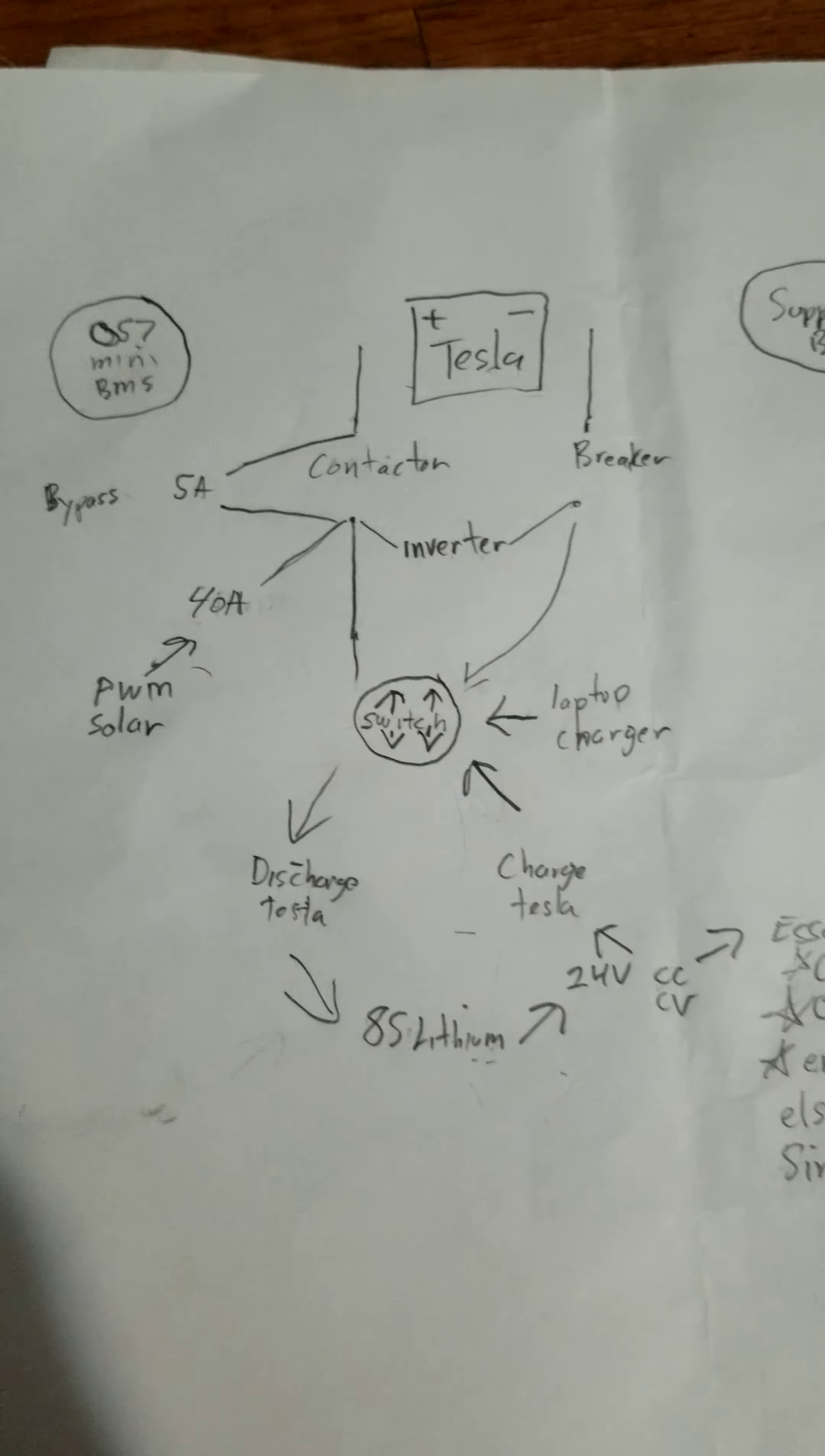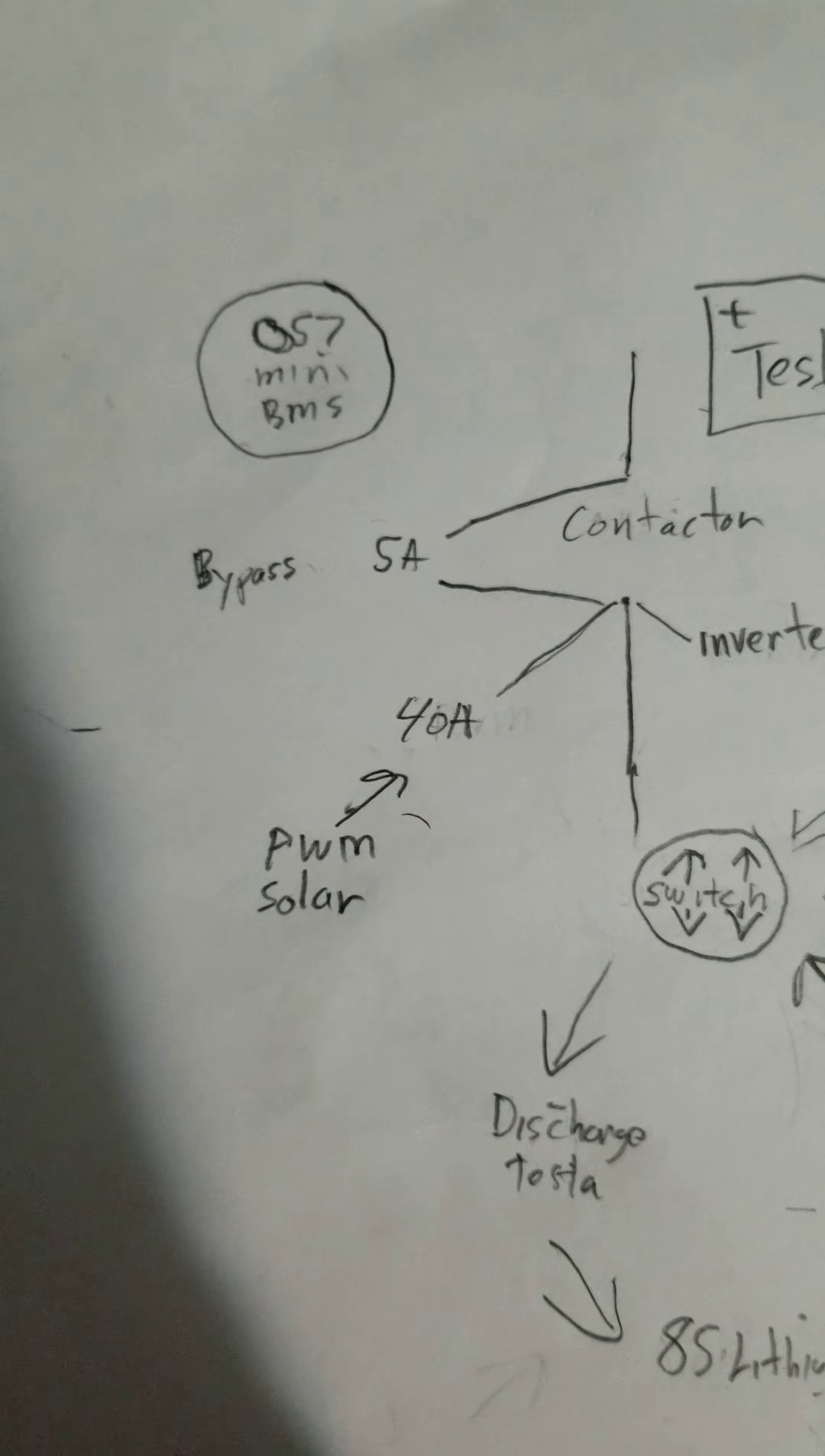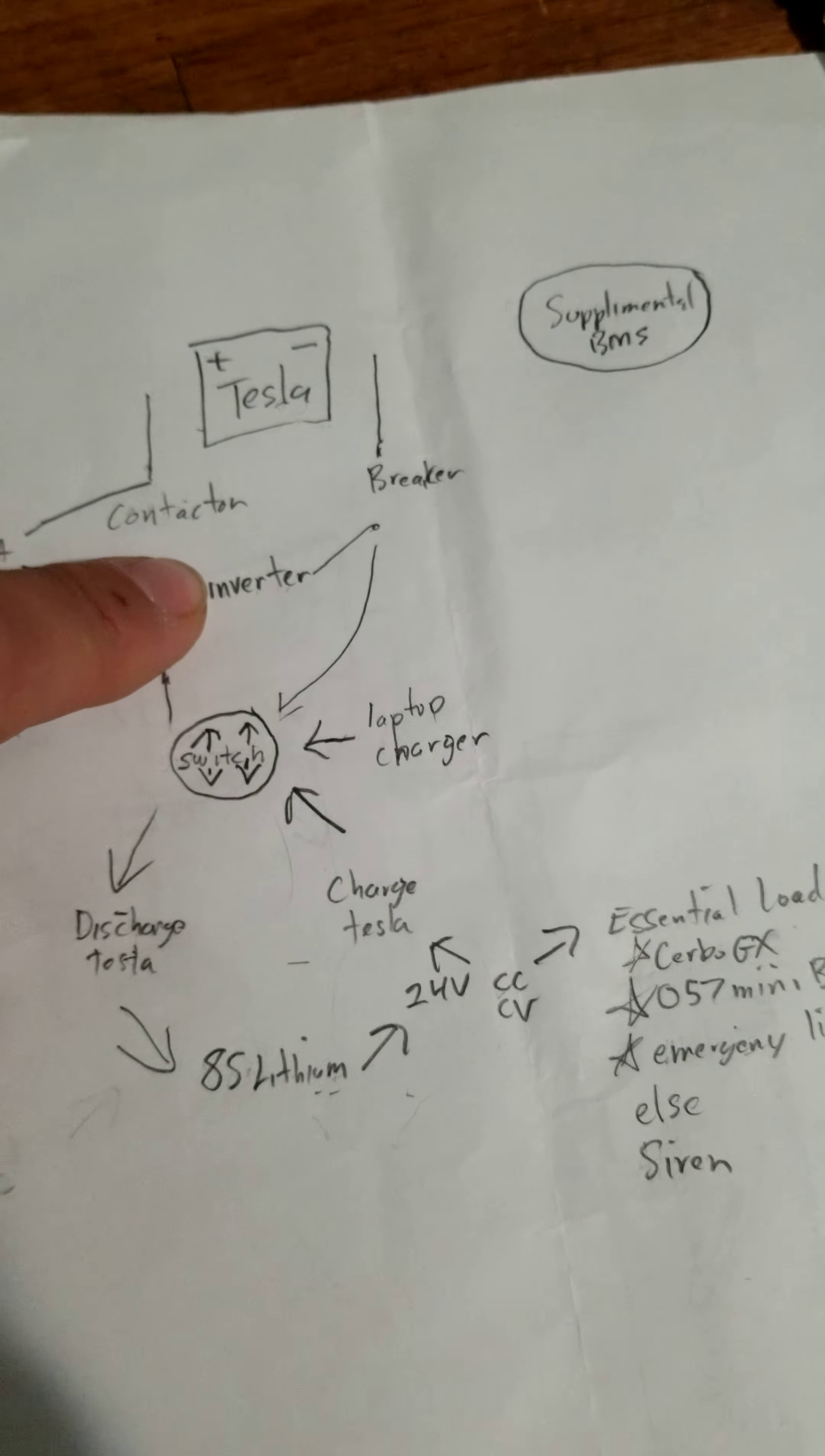What you're looking at right here is the wiring diagram for a camper van that's going to use the 057 Mini BMS as well as a supplemental system that I designed to control the Tesla battery and a Victron inverter.